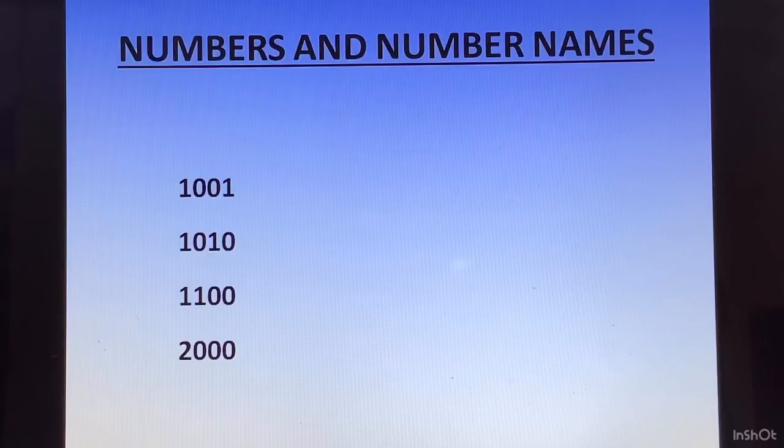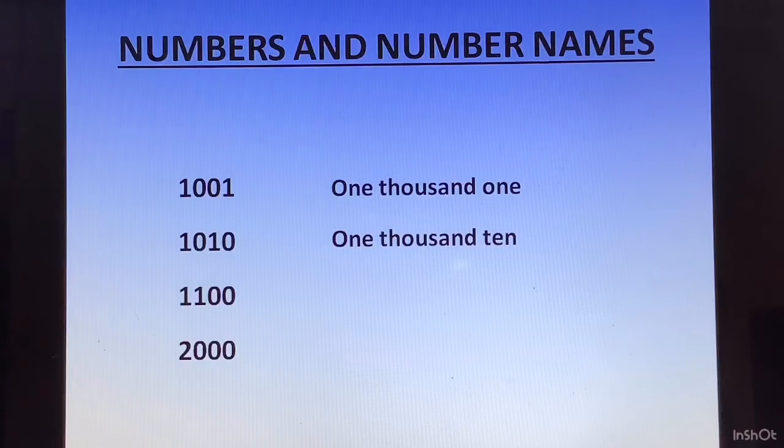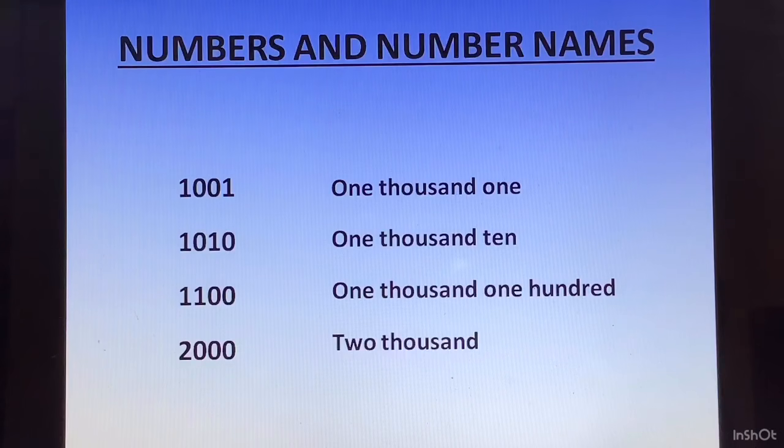Now let us see number names of a few 4 digit numbers: 1001 is one thousand one, 1010 is one thousand ten, 1100 is one thousand one hundred, 2000 is two thousand, and like this we can go on: 3000, 4000, 5000 and so on.